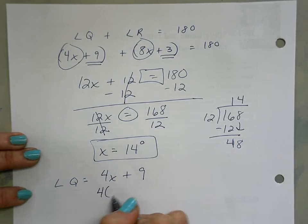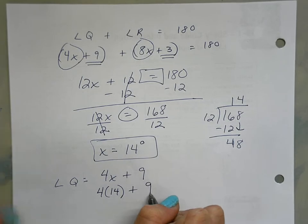So back to angle Q - it said angle Q was 4x plus 9. Now instead of x I can substitute the 14, so 4 times 14 plus 9, which is 56 plus 9, which is 65 degrees for angle Q.